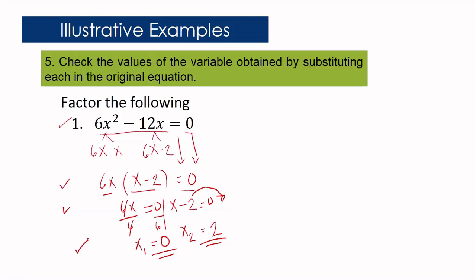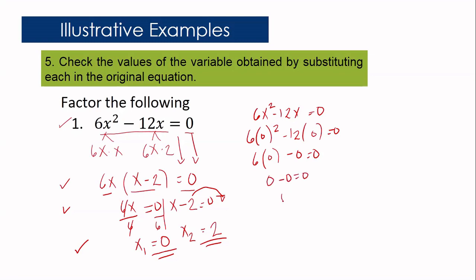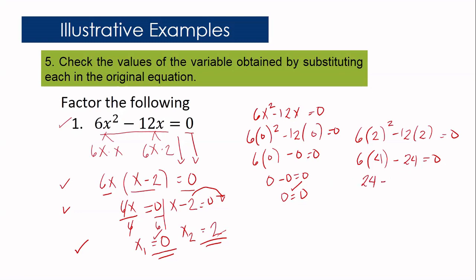Step 5: Check by substituting in the original equation 6x squared minus 12x equals 0. If x equals 0: 6 times 0 squared minus 12 times 0 equals 0, which gives 0 equals 0. Correct. If x equals 2: 6 times 2 squared minus 12 times 2 equals 0, so 6 times 4 is 24 minus 24 equals 0, giving 0 equals 0. Both solutions are verified. The solutions are 0 and 2.